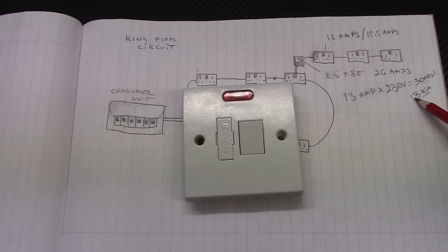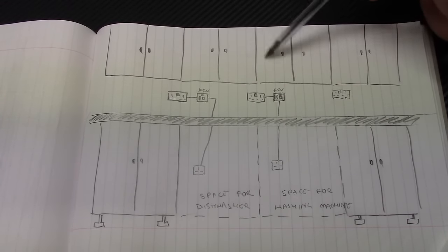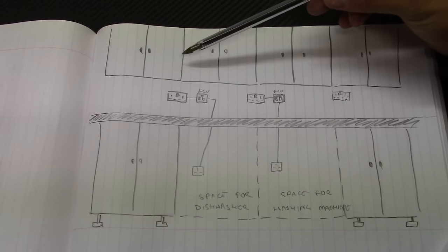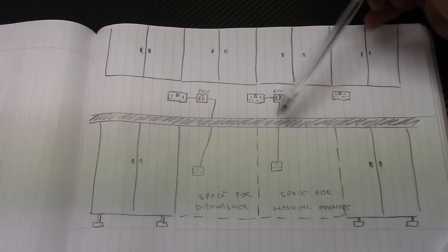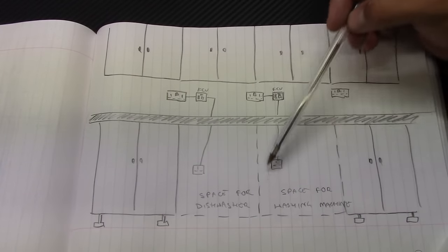That's 3 kilowatts. Another convenient way of using FCU is for the kitchen appliances. So this is the drawing of the kitchen, wall units, worktop, base unit, base unit and obviously space for the dishwasher.